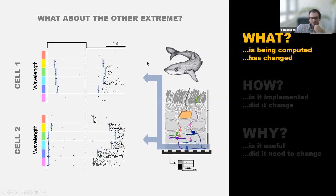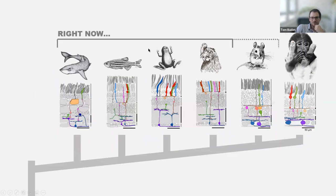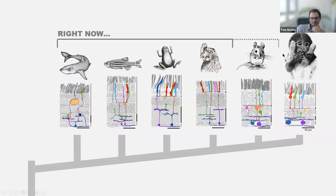With this I will close. Right now in the lab we've got these species — fish, chicken, shark — plus work on frogs that I haven't had a chance to talk about. We're hoping to link all of these to each other and to mice and of course primates.